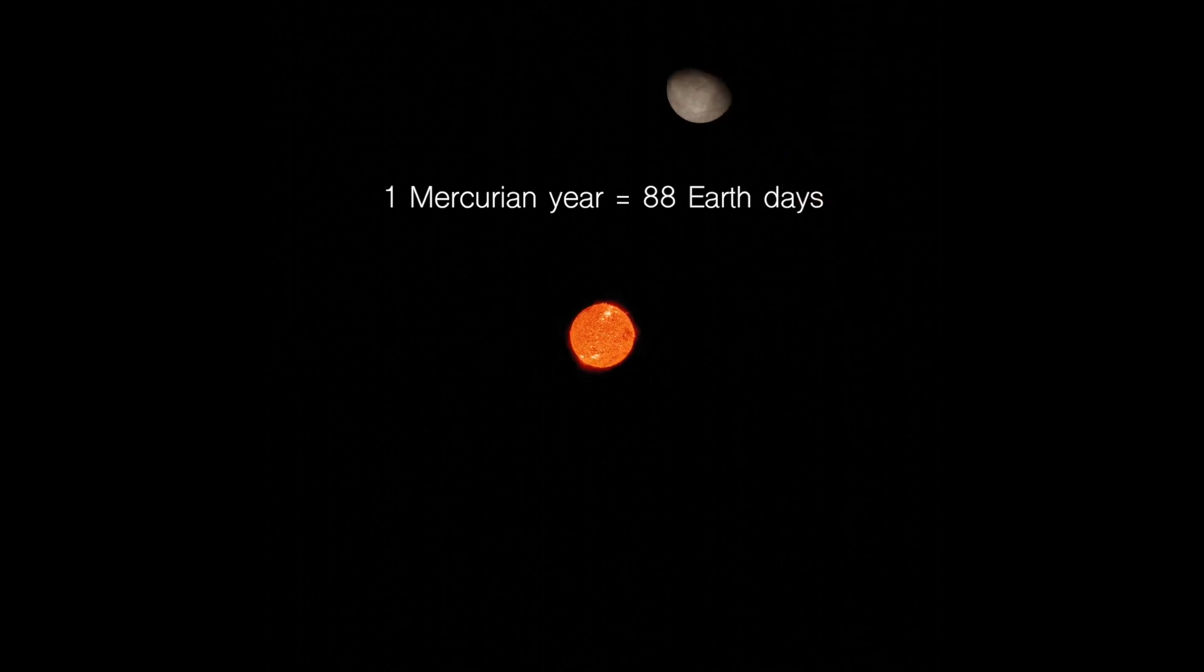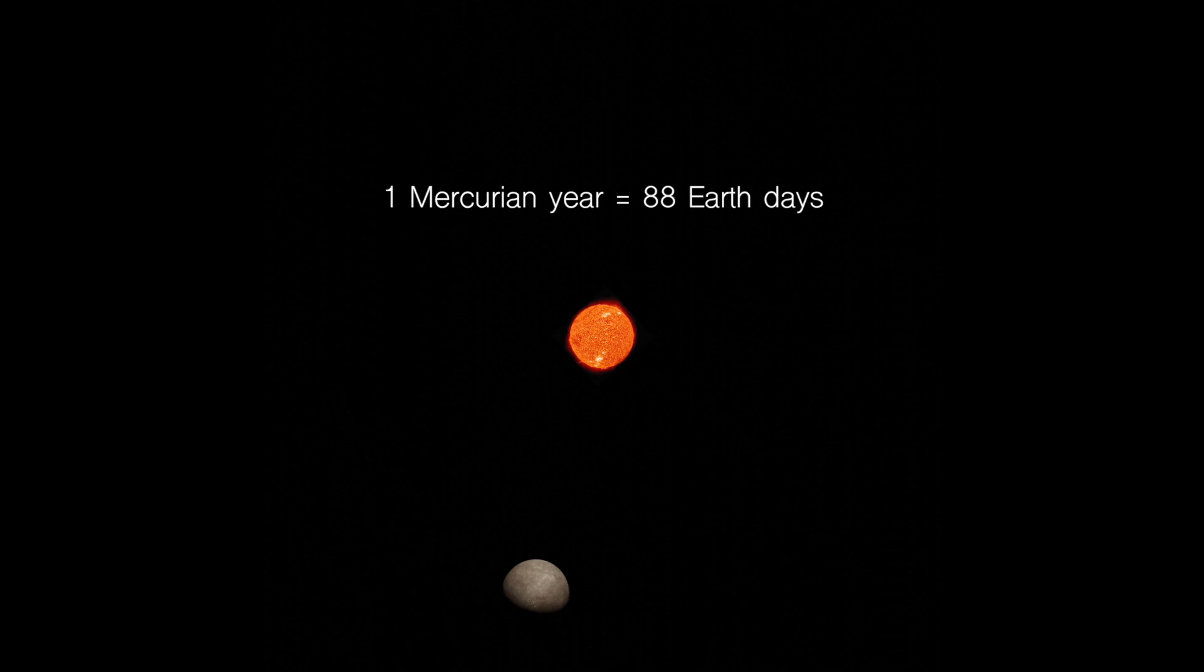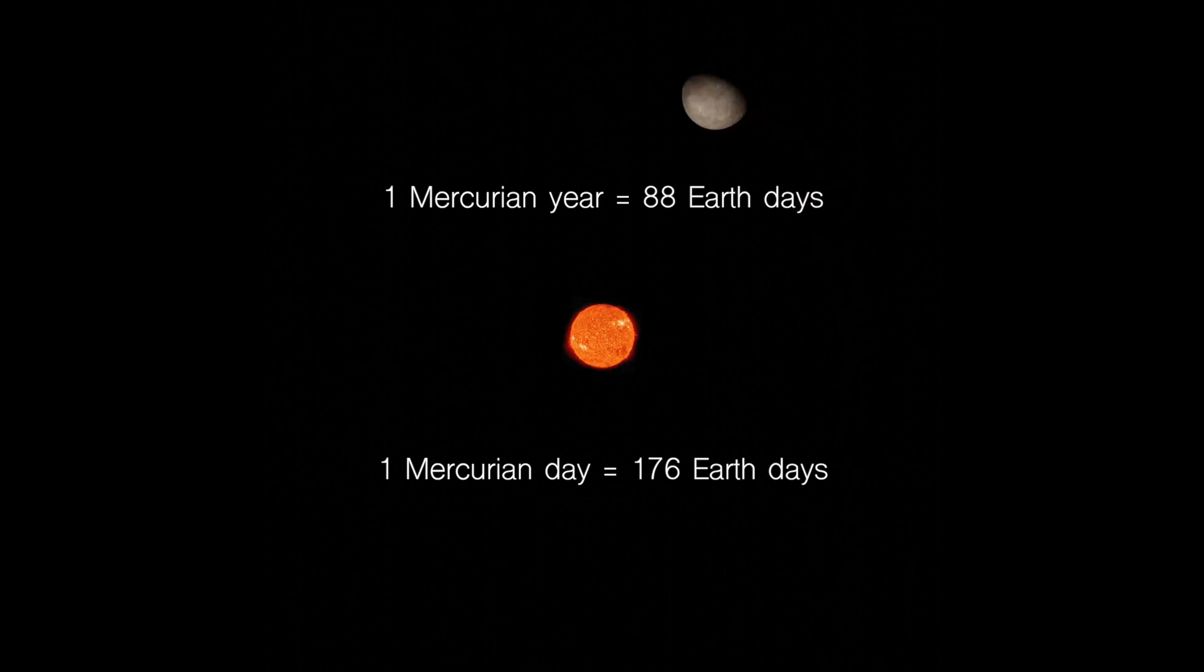Its proximity to the Sun makes Mercury a world of extremes. It completes one orbit every 88 Earth days, giving it the shortest year of any planet. By contrast, it experiences very long days due to its slow rotation. Two full orbits are required for one day to pass on the surface.